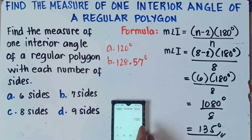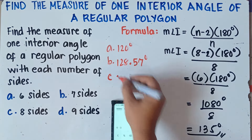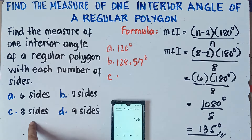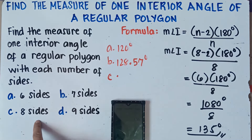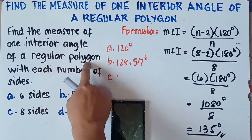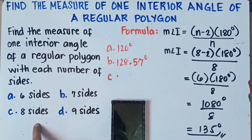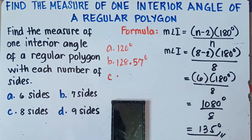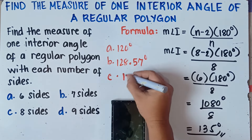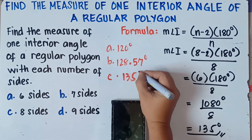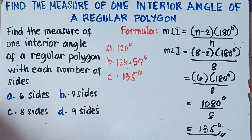Therefore, each interior angle of a regular — a polygon with 8 sides is called an octagon. Since we have a regular polygon, this is a regular octagon. Each interior angle of a regular octagon measures 135 degrees.